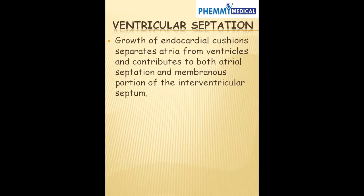The growth of the endocardial cushion separates the atria from the ventricles, and also contributes to both atrial septation and the membranous portion of the intraventricular septum. So the endocardial cushion is very important in dividing the atria into two, dividing the ventricles into two, and also in forming the valves.